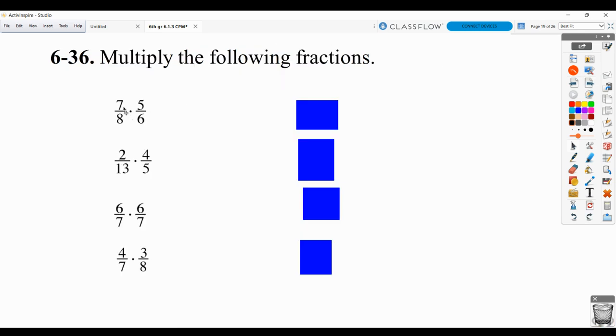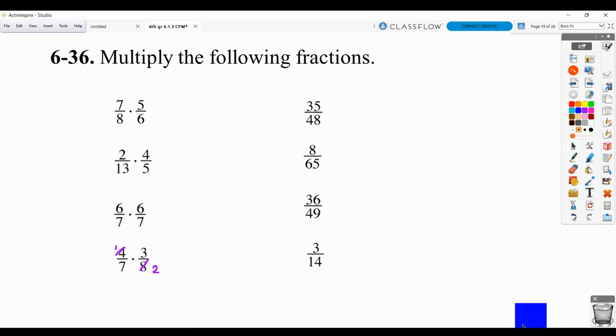For multiplying these, you will multiply across. If you can simplify before you multiply, that would be one way to do it. Or you could do it afterwards. So the first one, you would multiply 7 times 5 and get 35, 8 times 6 and get 48. So 35/48ths. For the next one, 8/65ths. For the third, 36/49ths. And for this last one, you can simplify first. 4 will divide by 4, 8 will divide by 4. Now you multiply across and get 3/14ths.